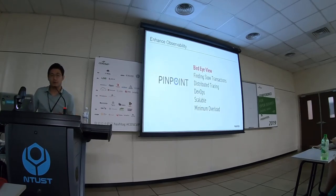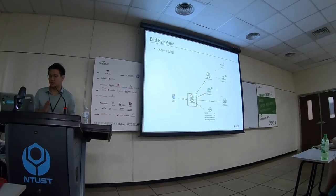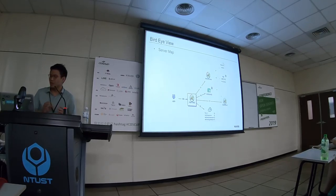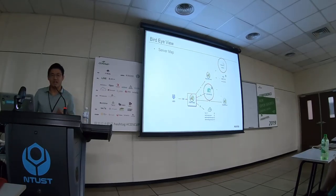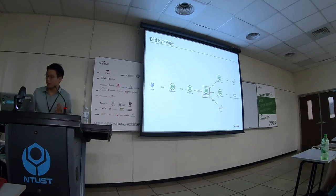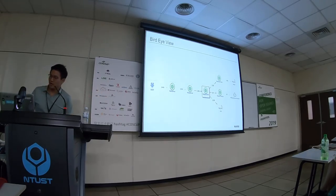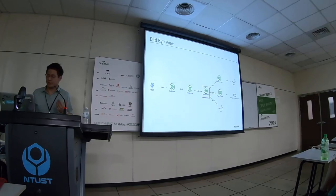We enhance observability with the following features. The first one is a bird-eye view — this is the server map, shown on the first page of Pinpoint web. We gain a bird-eye view of your system, making it easy to understand the architecture. As you can see here, there are three applications running on Tomcat servers, and the cache is used with MySQL as a database.